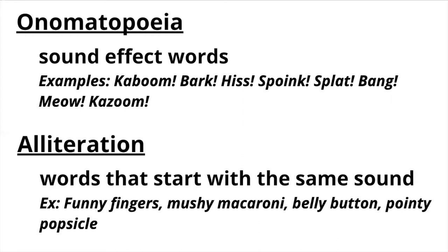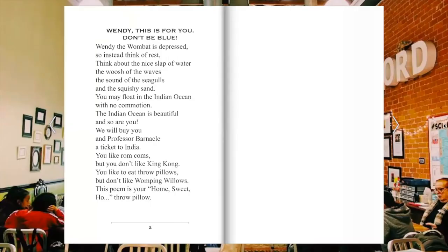See if you notice either onomatopoeia or alliteration in the poem we're about to read. Our first poem is called Wendy, This is for You, Don't Be Blue. Wendy the wombat is depressed. So instead, think of rest. Think about the nice slap of water, the whoosh of the waves, the sound of the seagulls, and the squishy sand.